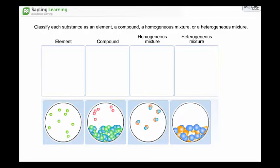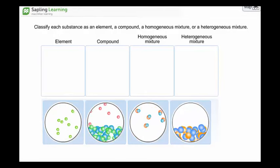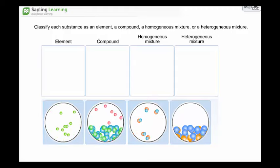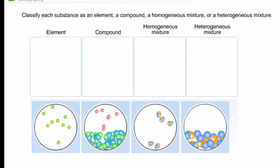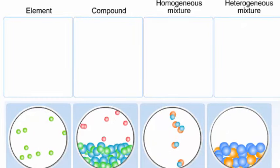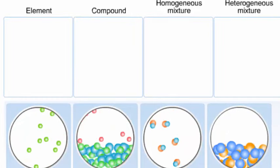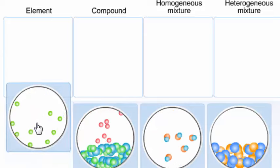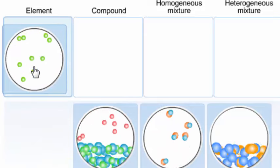Here, use the animation to classify each substance as an element, compound, homogeneous, or heterogeneous mixture. This first one is composed of a single type of atom, all green dots. So this one is an element.